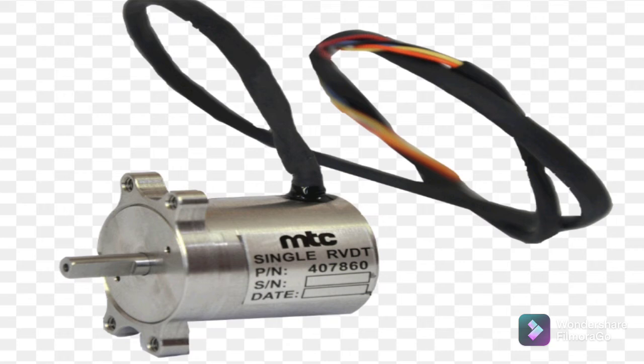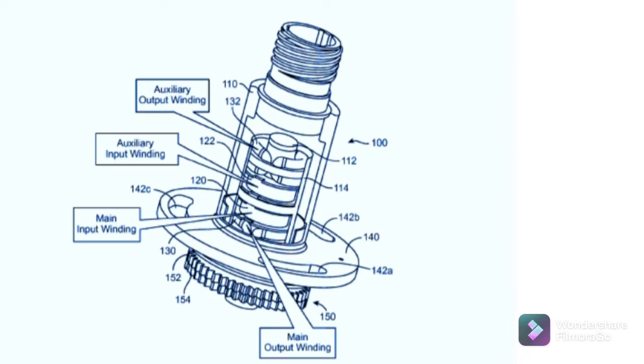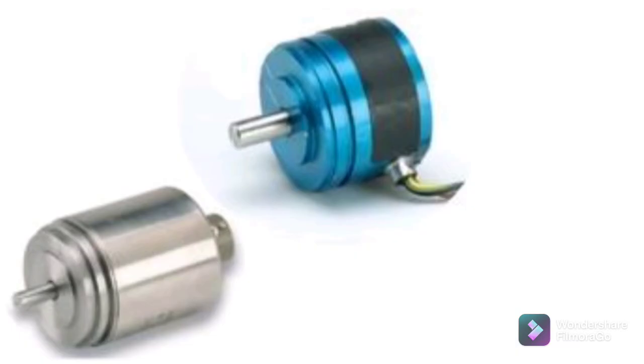Based on the movement of the shaft in the transformer, three conditions will be produced: when the core is at null position, when the core rotates in clockwise direction, and when the core rotates in anticlockwise direction. So first case we will discuss when the core is at null position.